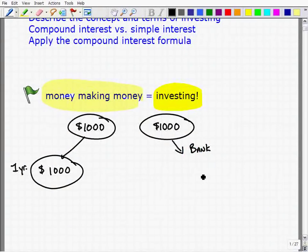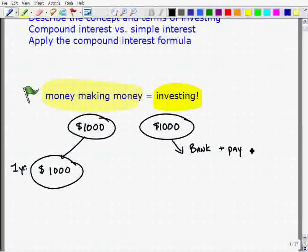The bank will say, let us hold your money. We'll save your money for you, and for the privilege of doing that, we're going to pay you for letting us hold your money, and that payment is called interest.